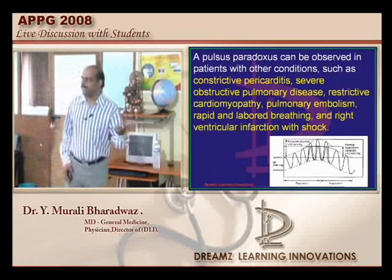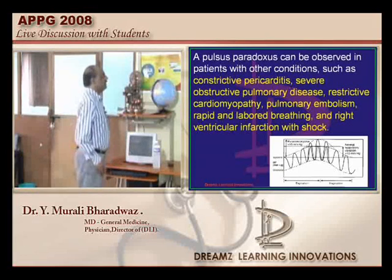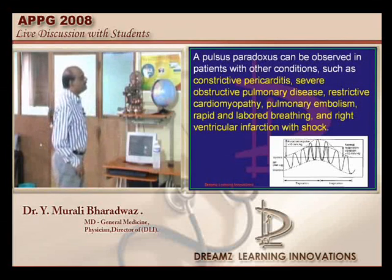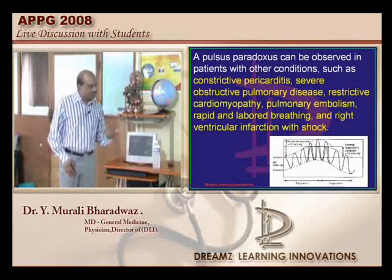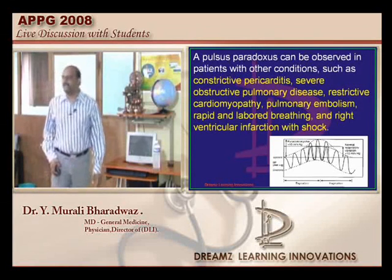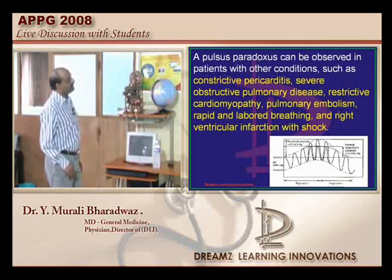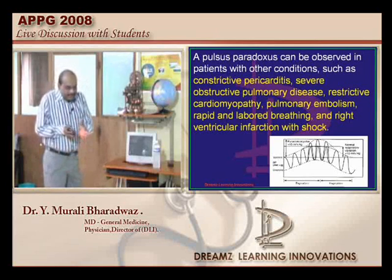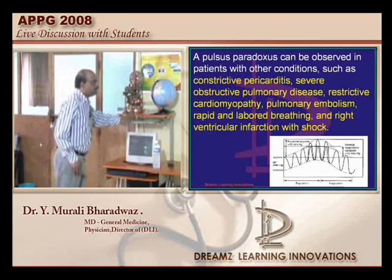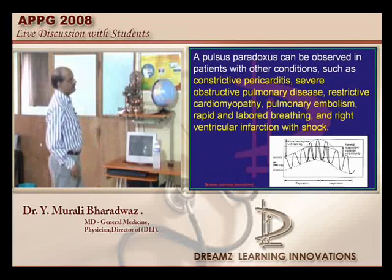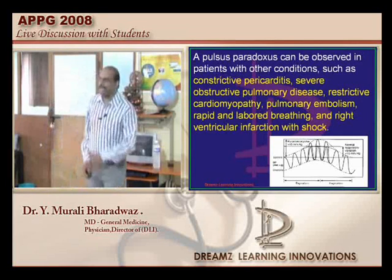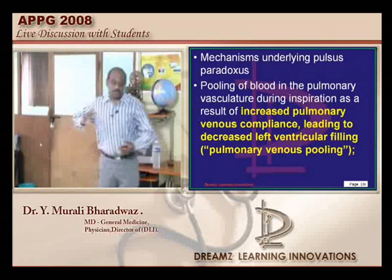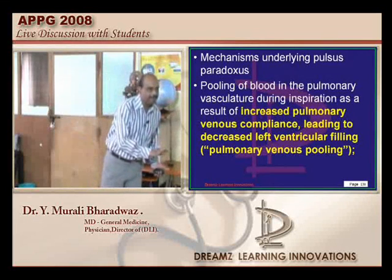What is the mechanism of pulsus paradoxus? One mechanism: whenever we have inspiration, blood becomes pooled in the pulmonary vasculature because of increased pulmonary venous compliance, decreasing blood on the left side, and hence cardiac output becomes diminished. Second theory: once there is more filling of the right heart, it causes distension of the right ventricle, compressing the left ventricle and decreasing stroke volume. Most importantly, for pulsus paradoxus to happen, the right ventricle should dominate the left ventricle and make it become compromised.